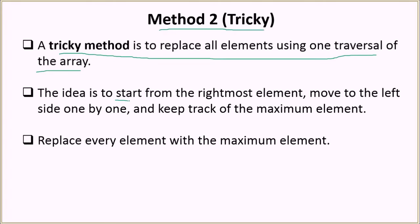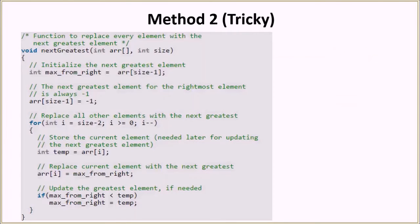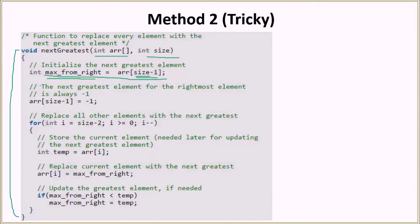The idea is to start from the rightmost element, move to the left one by one, keep track of the maximum element, and replace every element with that maximum. Here is the function — we have the array and its size. We initialize the max-from-right as the last element at index size minus one. Since the next greatest element for the last element is always minus one, we update the array at size minus one with minus one.